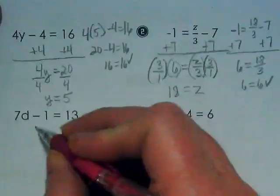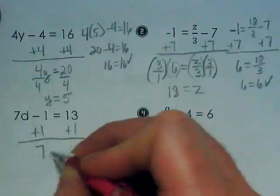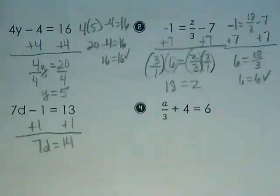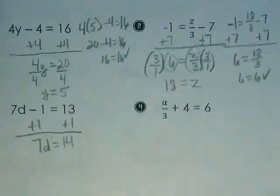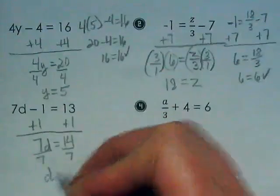I get 7d equals 14. How do I separate that 7 from that d? I'm going to divide. D is equal to 2. I should be boxing these because they get messy on these pages.